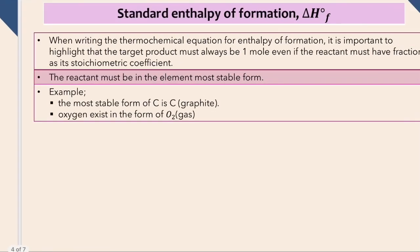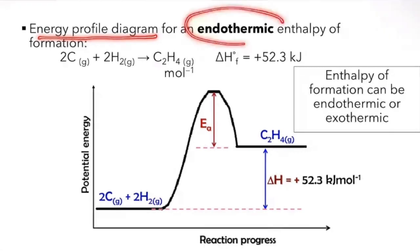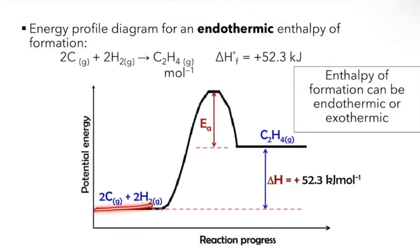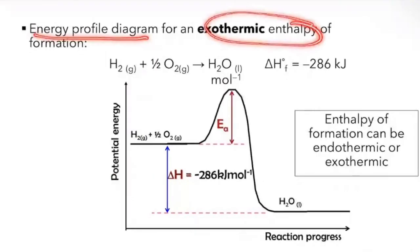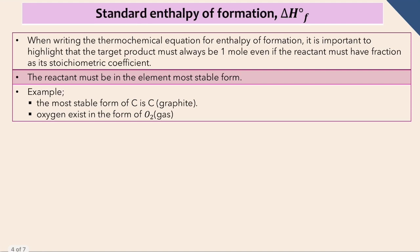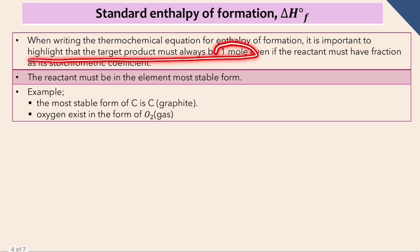This slide shows the energy profile diagram for endothermic enthalpy of formation, with the activation energy and delta H shown. Please remember that the enthalpy of formation can be endothermic or exothermic. This is the endothermic enthalpy profile, and this one is the energy profile diagram for exothermic enthalpy. When writing the thermochemical equation for enthalpy of formation, the target product must always be one mole, even if the reactant must have a fraction as its stoichiometric coefficient, and the reactant must be in the element's most stable form.